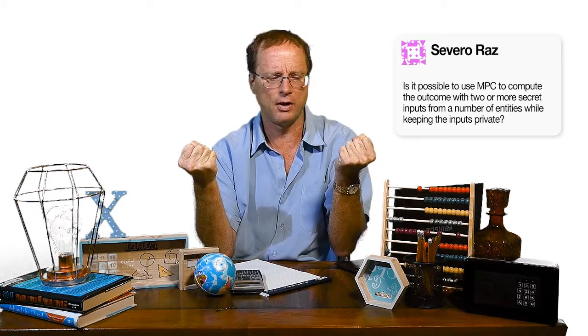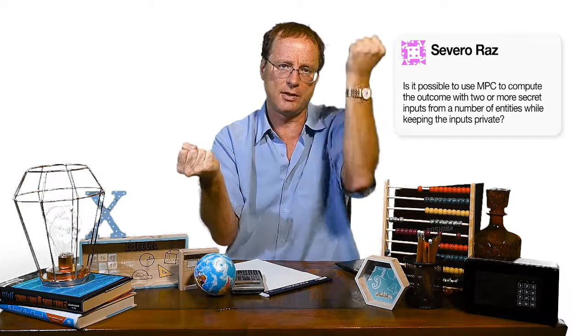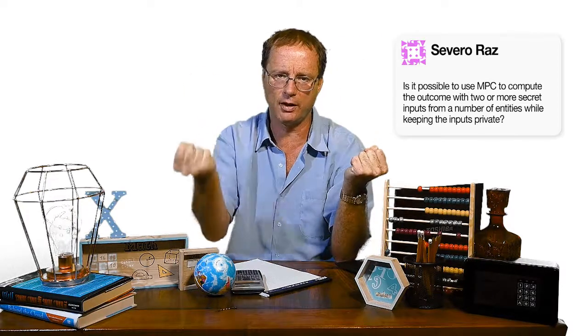In some sense, what you do is you take the key apart, and so you split it. You take like the number five, and then you split it into two plus three. Then this guy holds two, and this guy holds three.